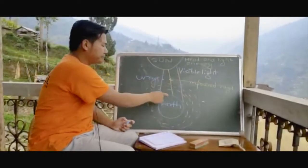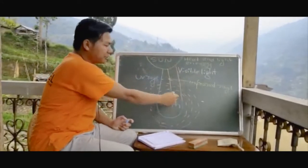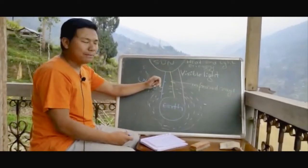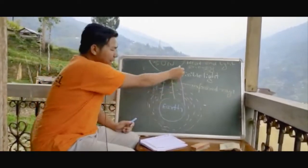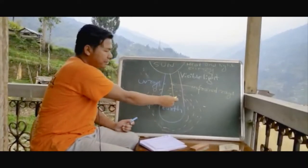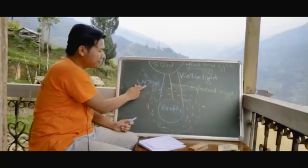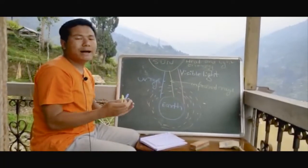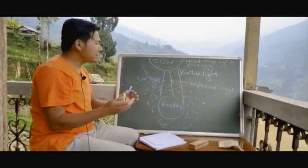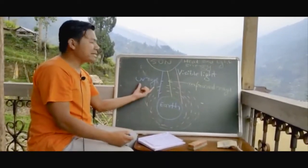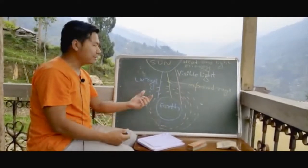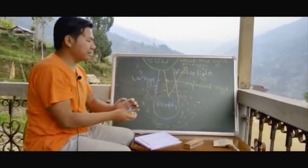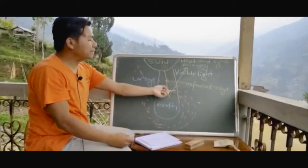When solar energy comes to the Earth's surface, it has to pass through the different atmospheric levels. UV rays coming from the sun are absorbed by the ozone layer. Infrared rays get reflected when they reach the surface of the Earth, and visible light comes through to the Earth's surface.